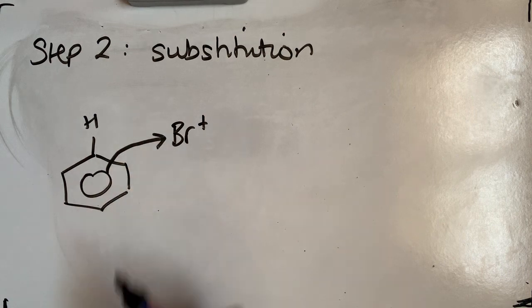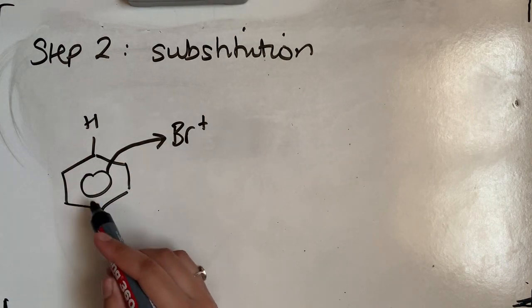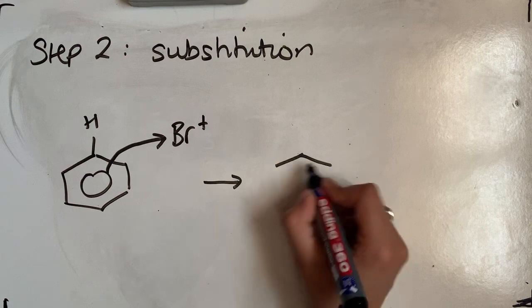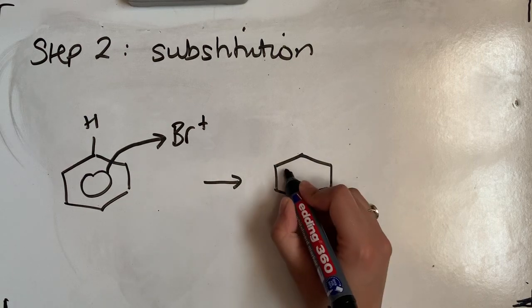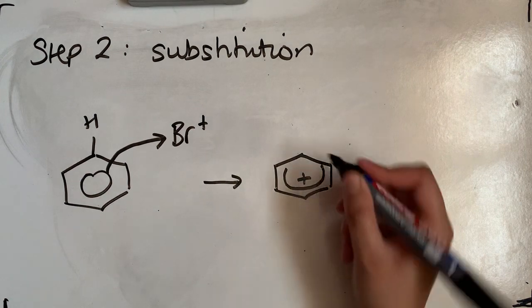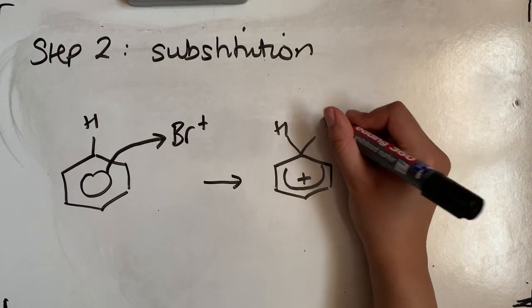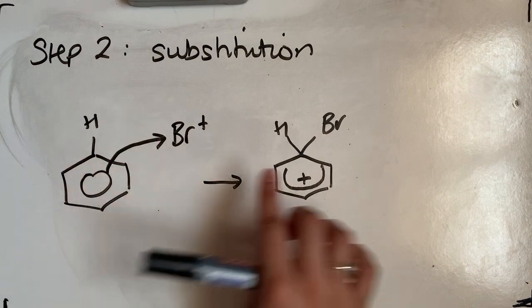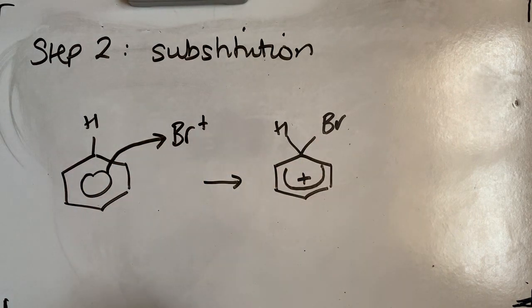That's going to disrupt that delocalized ring in the middle, and it's going to form this intermediate here. So remember, horseshoe going over all five carbons, positive charge there. Form a bond between the carbon and the bromine.